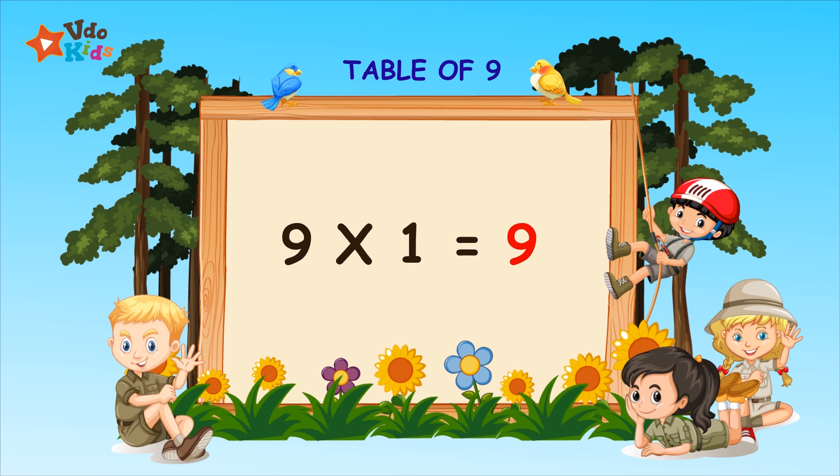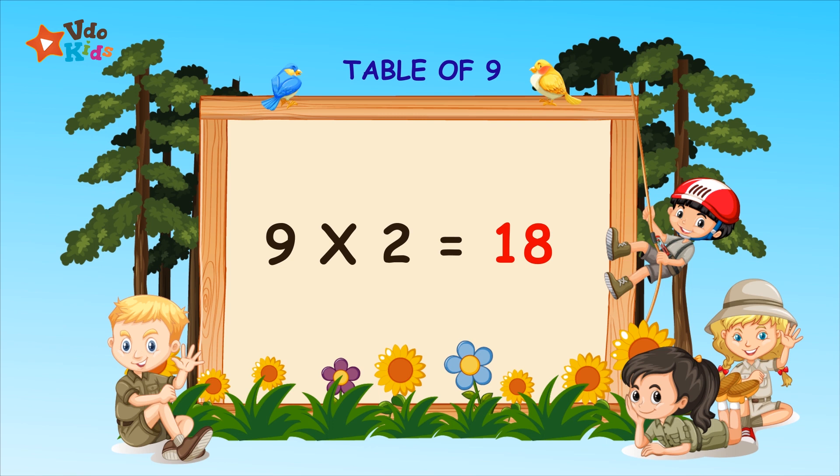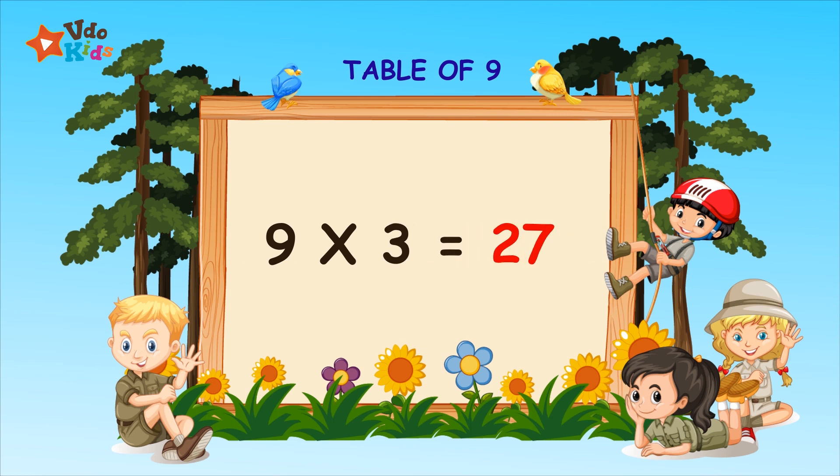9 ones are 9. 9 twos are 18. 9 threes are 27. 9 fours are 36.